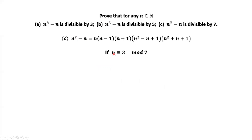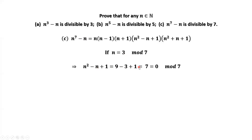If the remainder of N divided by 7 is 3, we use a different factor: N squared minus N plus 1 has remainder 9 minus 3 plus 1, which equals 7. Since 7 is divisible by 7, N to the power of 7 minus N is divisible by 7 when the remainder of N is 3.